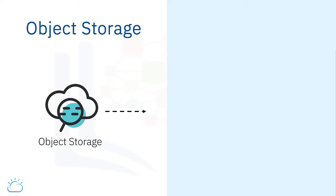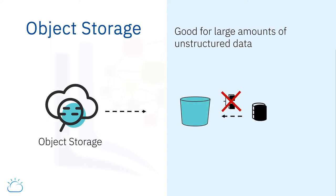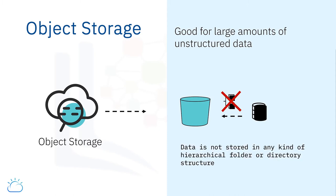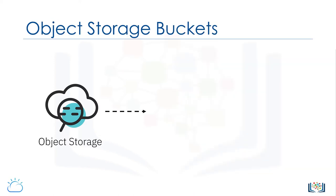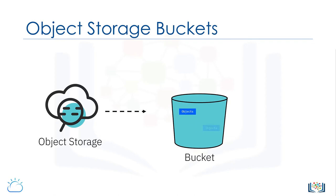So when would you use object storage? Object storage is great for storing large amounts of unstructured data. By unstructured, this means that the data is not stored in any kind of hierarchical folder or directory structure.